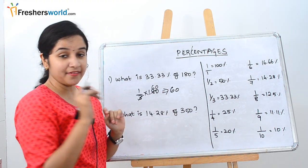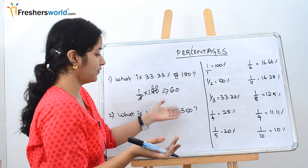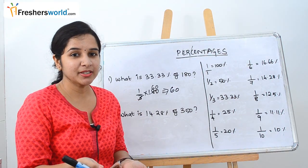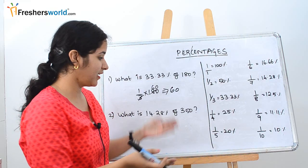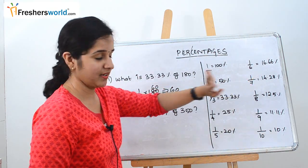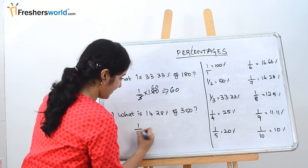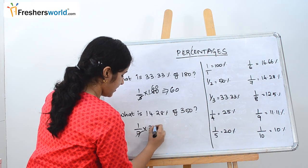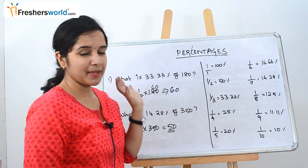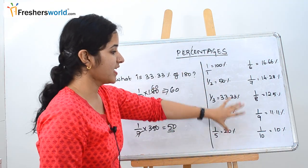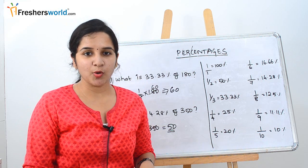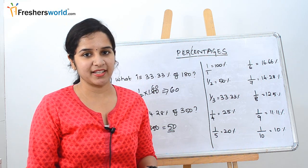Let's solve another problem. What is 14.28 percent of 350? Instead of using the elaborate method of 14.28 divided by 100 into 350, you know that 14.28 is nothing but 1 by 7. So directly you take 1 by 7 into 350, which is nothing but 50. This is the main reason for knowing these fractions — it's very simple to remember, and most percentage problems can be solved within 5 to 6 seconds.